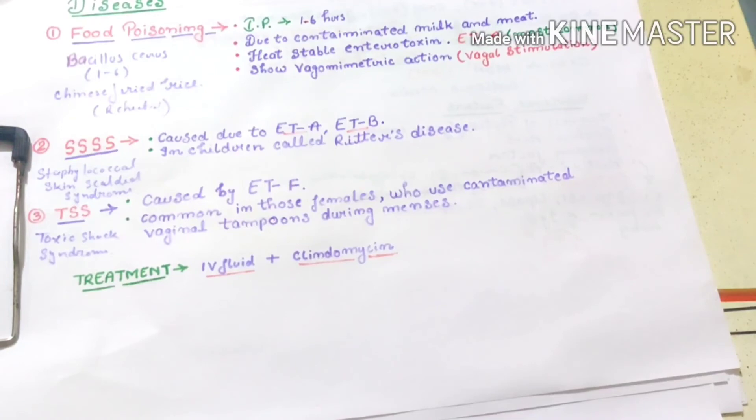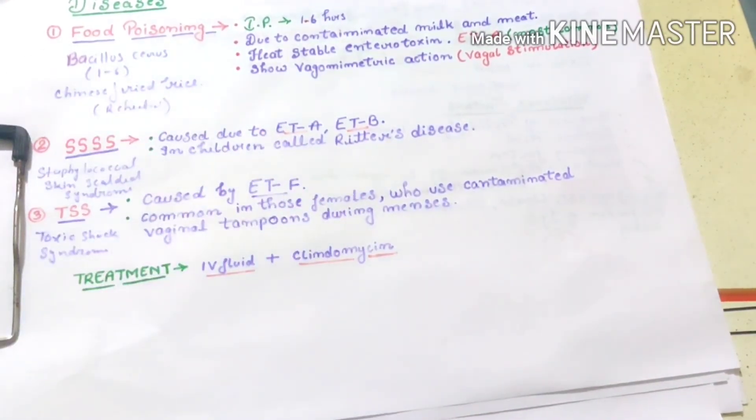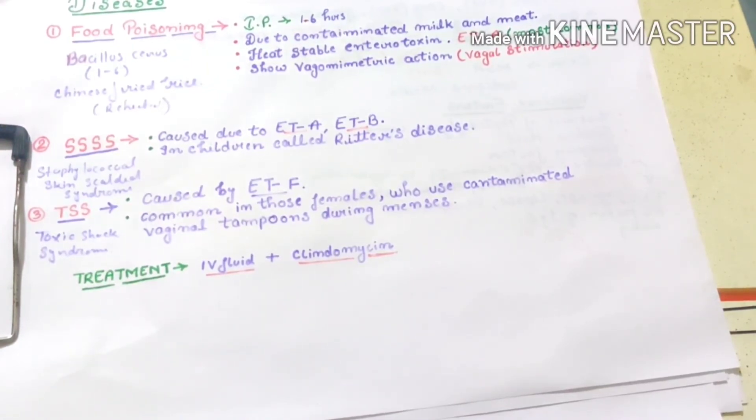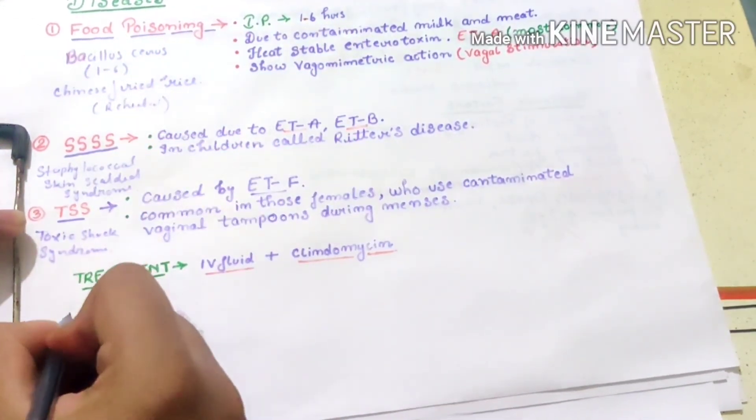In case of TSS, it is caused by ETAF enterotoxin, which is a super antigen. Now, what does super antigen mean? Super antigen means it causes 20% activation of T lymphocytes, which release massive lymphokines, which leads to shock. ETAF is the super antigen.